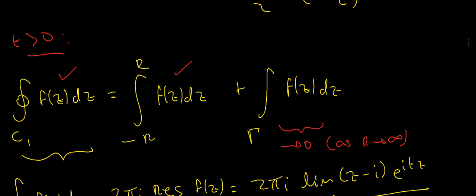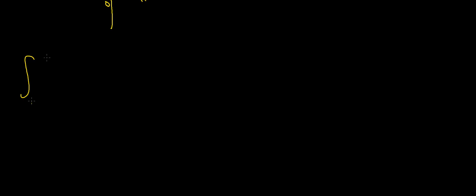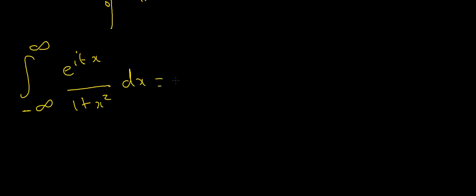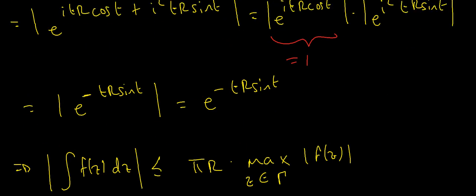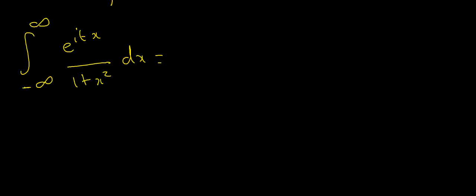Combining these results: as r goes to infinity, the integral over C1 equals π·e^{−t}, and the arc integral gamma 1 vanishes, so the integral from minus infinity to infinity of e^{itx} / (1 + x²) dx equals π·e^{−t} for t greater than 0.